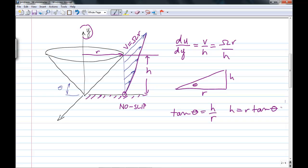So h equals r tan theta. And we can make that substitution. And we get du/dy equals omega r over r tan theta. We notice that the radius cancels. So it's just omega over tan theta for the velocity gradient.